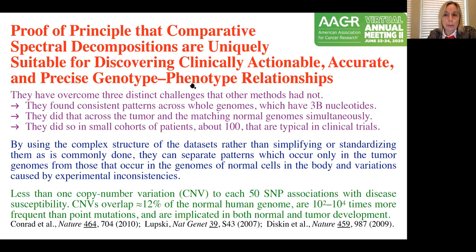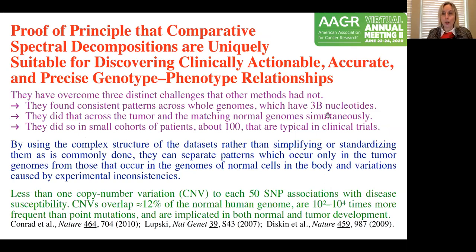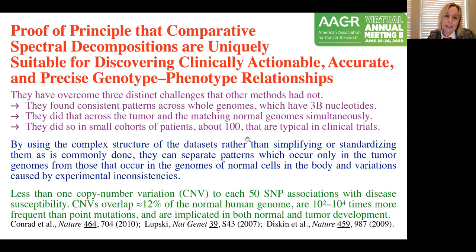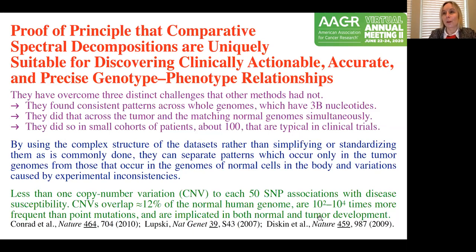To do that, they overcame three challenges: finding patterns across whole genomes of three billion nucleotides; finding patterns simultaneously across tumor and normal genomes without simplifying the complex structure of the data; and doing that in small cohorts of patients typical in clinical trials. There are very few copy number variation associations with disease relative to SNP associations, even though copy number variations are much more prevalent in our genome and are implicated in both normal and tumor development. These comparative spectral decompositions definitely solve an existing problem.